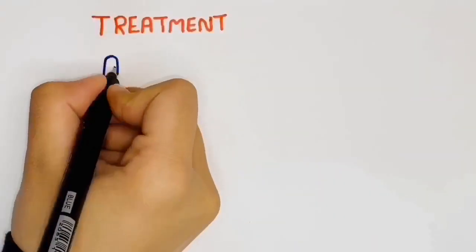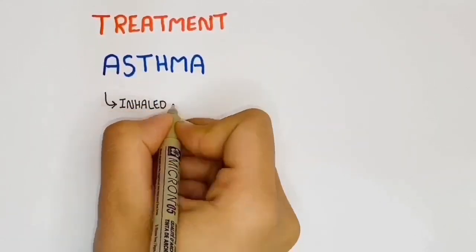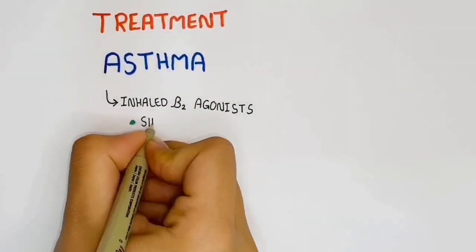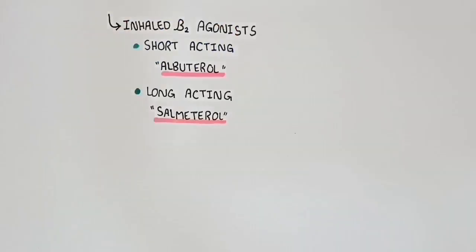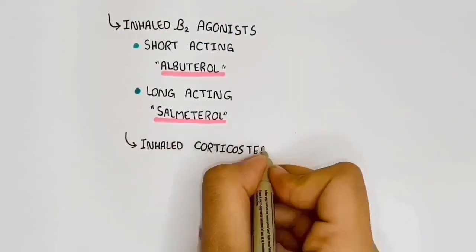Treatment for asthma: we use inhaled beta-2 agonists, short-acting such as albuterol and long-acting such as salmeterol. Also, we can use inhaled corticosteroids.